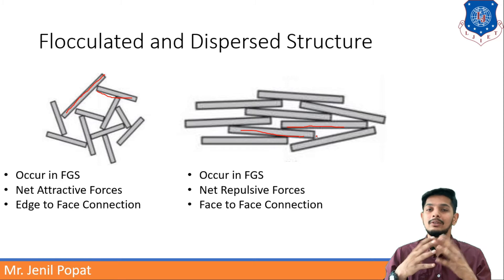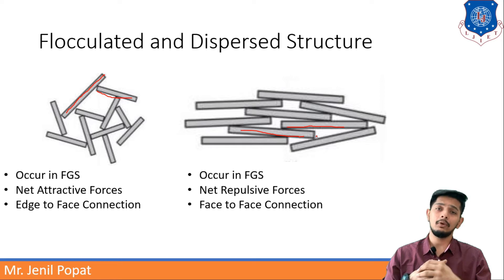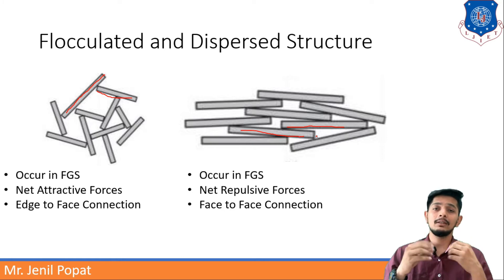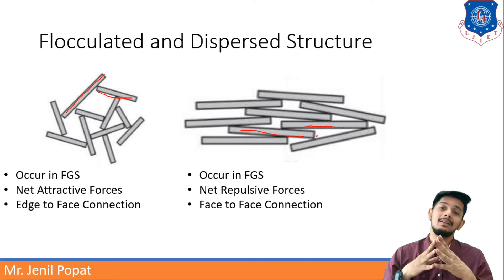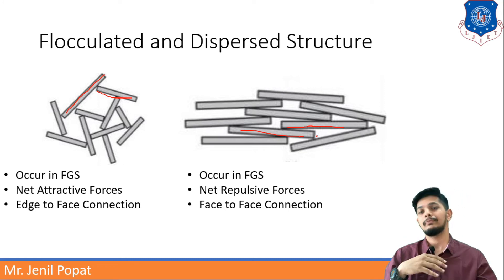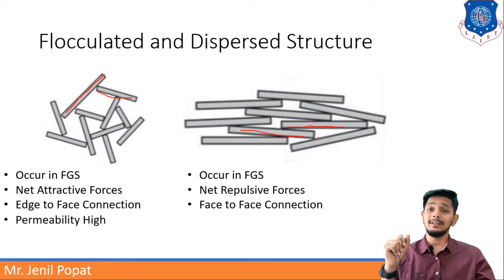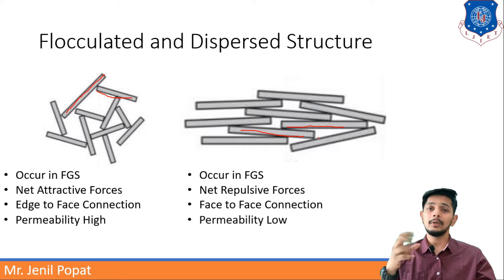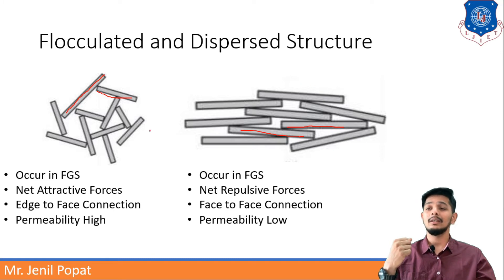Dispersed structure generally has lower shear strength. An example of flocculated structure can be seen on the ocean side, or we can say beaches — the soils there are generally flocculated ones. Moving forward: for flocculated structure, permeability is high. Permeability is the ability to permit water. It permits water more when compared to dispersed structure. Dispersed structures permit lesser water, as you can see the structure itself has lesser space than the flocculated one.